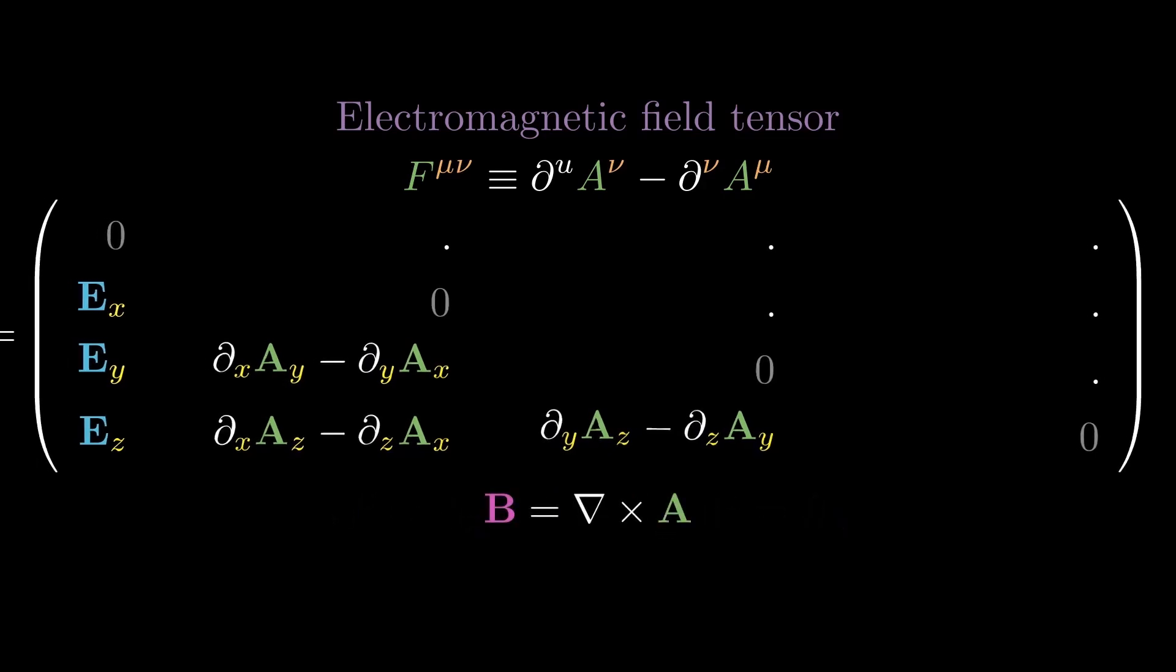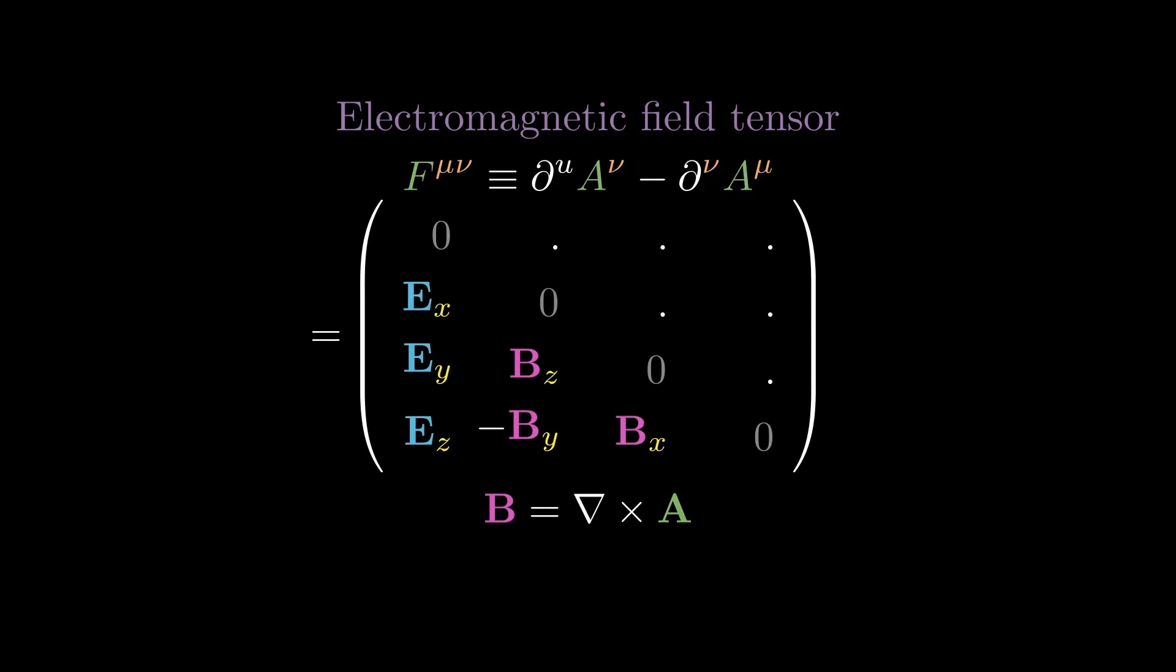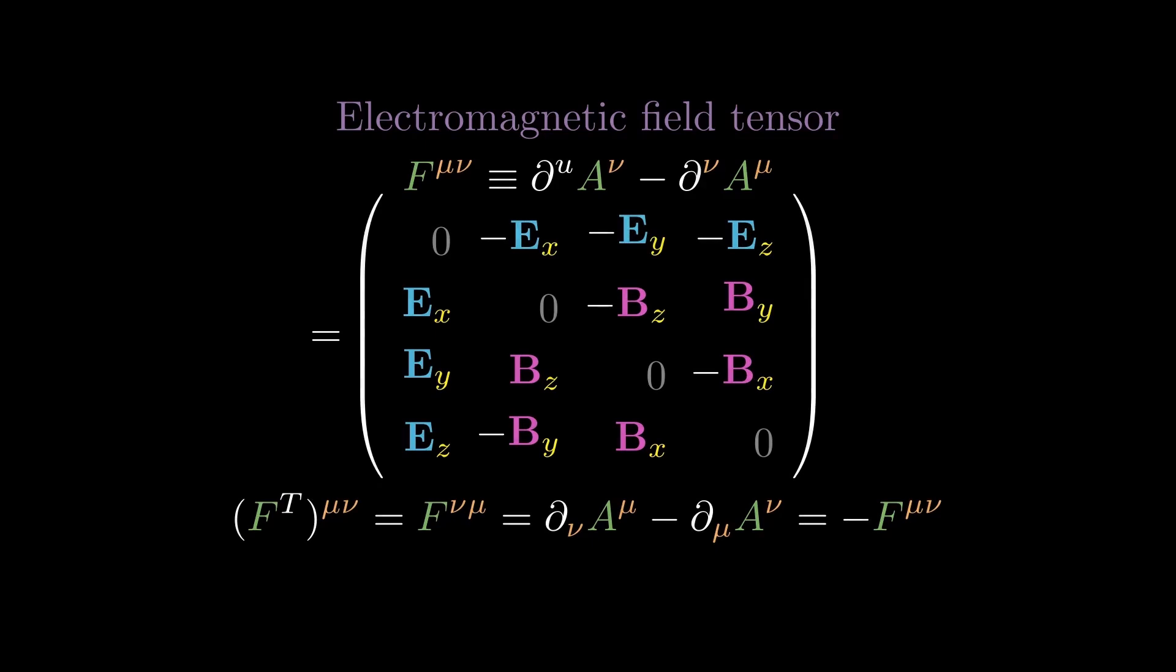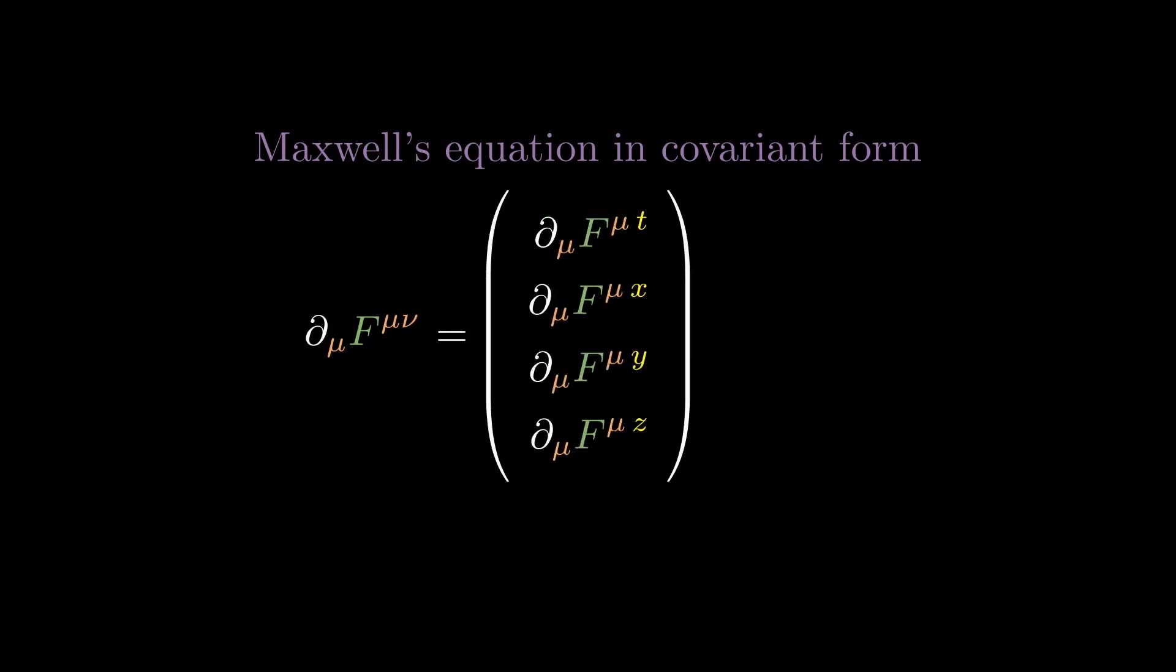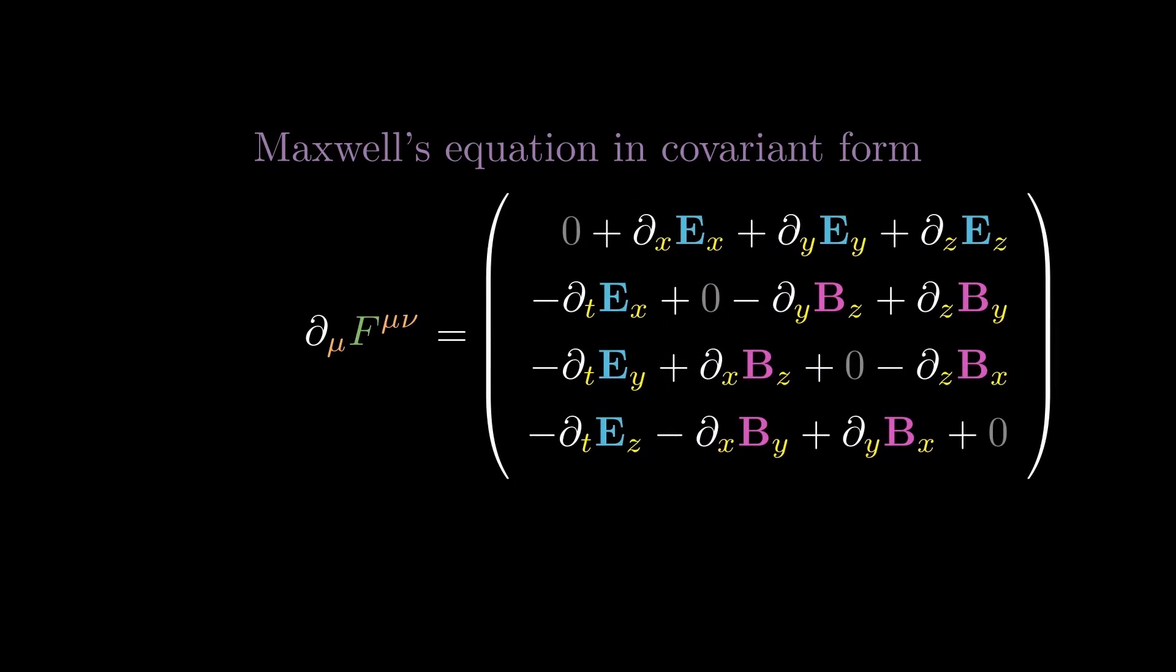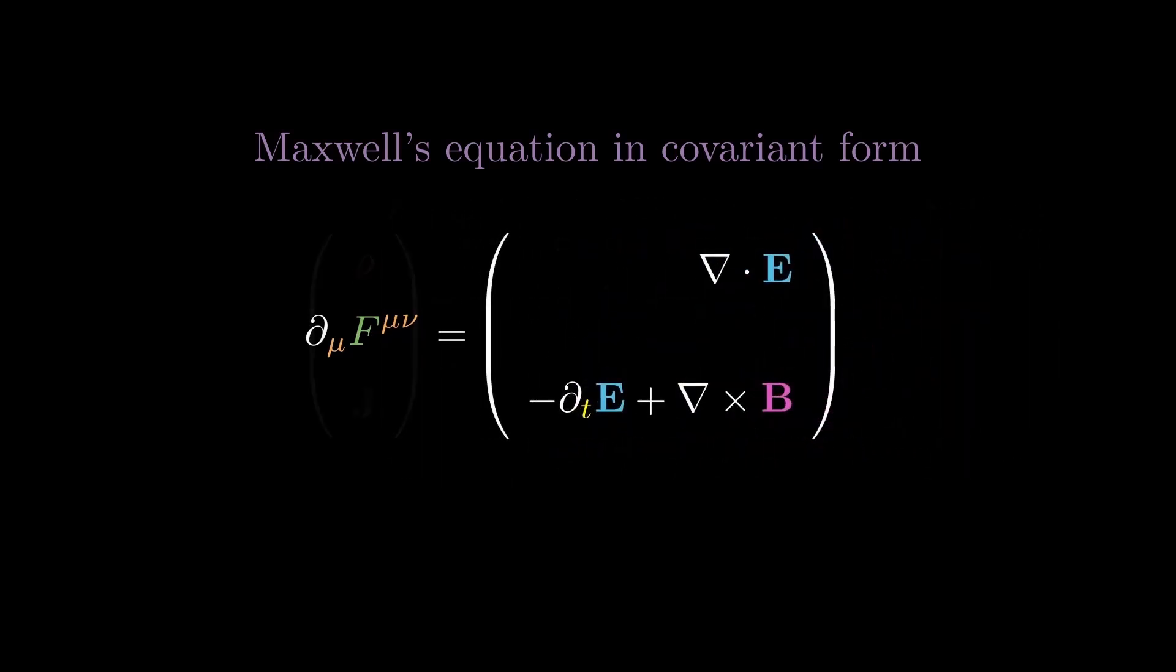Recovering the electric field in the time row and column and the magnetic field in the space rows and columns. Then, taking the spacetime derivative again and setting that to be equal to the charge density scalar in the time component and the current density 3-vector in the spatial component, which combined is also known as the current 4-vector, we're able to recover the first two of Maxwell's equations.